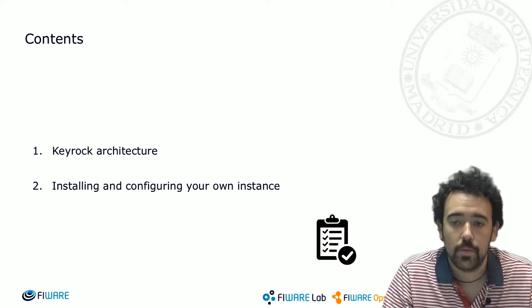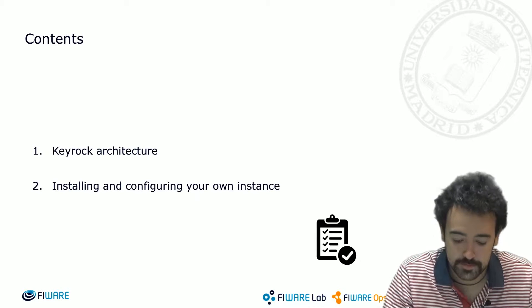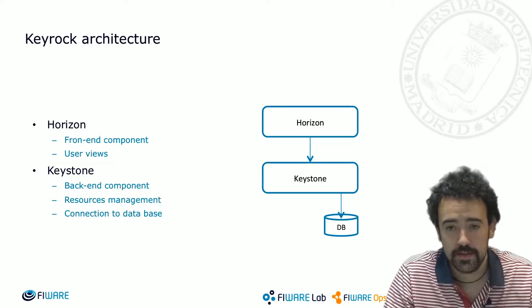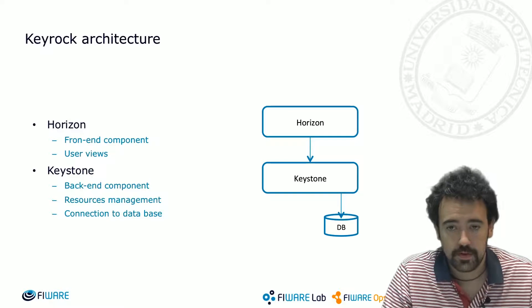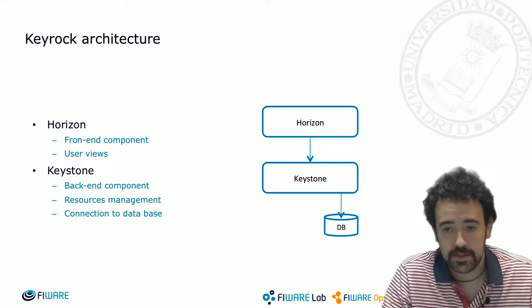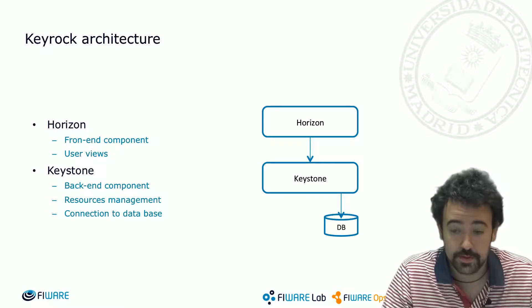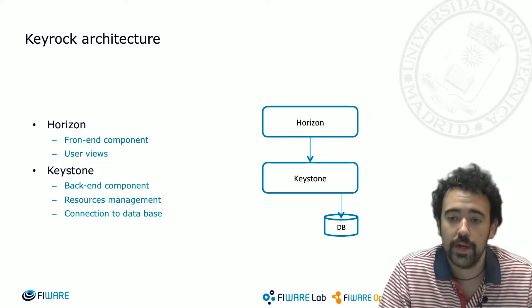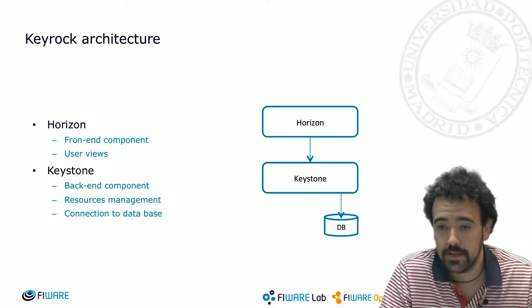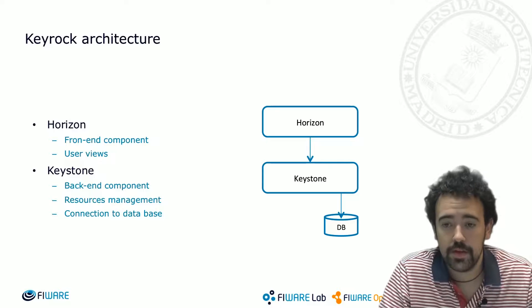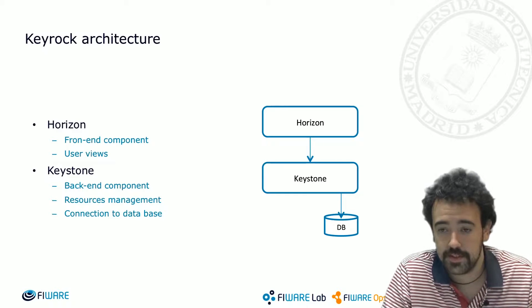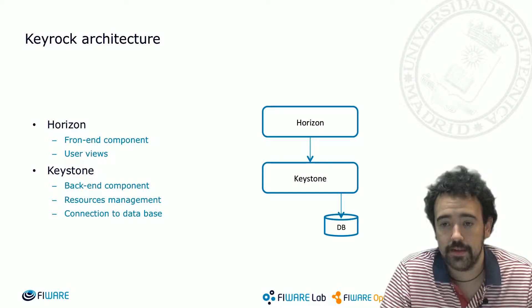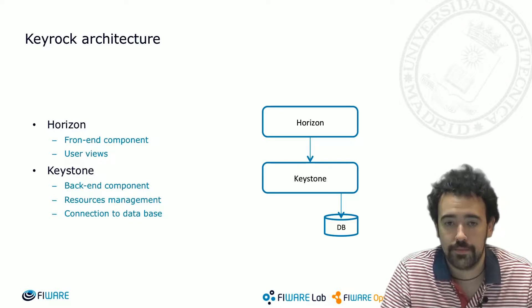Keyrock is basically formed by two components: Horizon and Keystone, which correspond to two projects of OpenStack. We have extended them by including several extensions and modifications imposed by the new features we need in FIWARE.